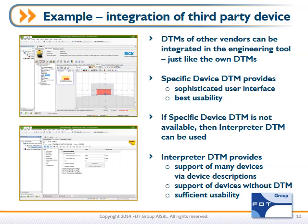Similarly, we can integrate third-party devices into this engineering tool. DTMs from other vendors integrate in the same manner as DTMs from the main supplier. That specific device DTM provides the same sophisticated user interface and best usability for that particular device. If a specific device DTM is not available, it may be possible to use an interpreter DTM. These interpreter DTMs support many devices via their device description. They don't have a special purpose-built DTM, but they provide sufficient functionality to configure the device — without the same rich graphical interface and diagnostics of a full-featured DTM — while still allowing the device to integrate into the engineering tool in the same manner.